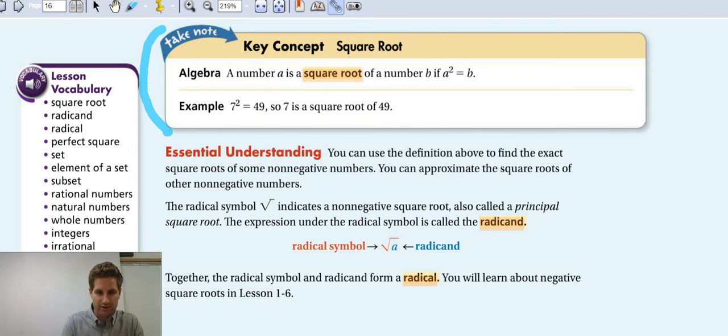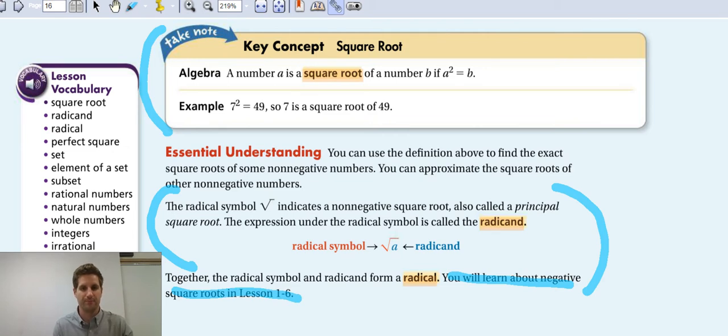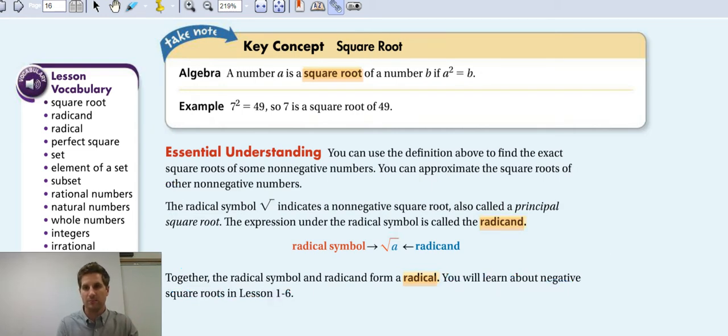This is kind of a cool write down here too. This gives us some more information about a square root. We could also call this piece right here as the radical, indicates a non-negative square root. Can't have negative square roots. They also call it the principal square root, which is meaning you can't have negative. The expression under the radical is called the radicand. So the radicand is right under there, and then the radical symbol. And together the radical symbol and the radicand form a radical. We'll talk about negative square roots later. But I would like you to go ahead and write all of this.